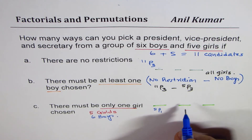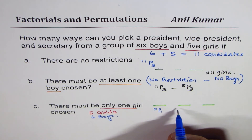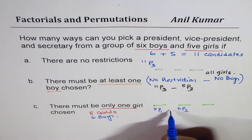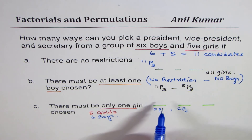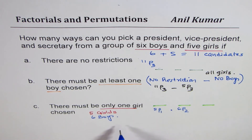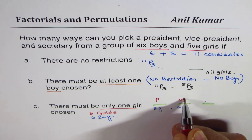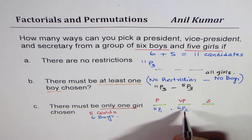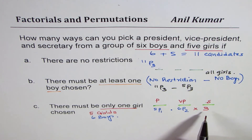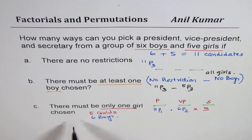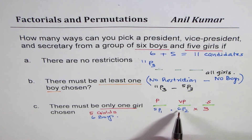The product of 5P1 and 6P2 gives one combination. But since there are three different posts — president, vice president, or secretary — the girl could hold any one of them. So we multiply by three. The answer for condition C is 3 × 5P1 × 6P2.